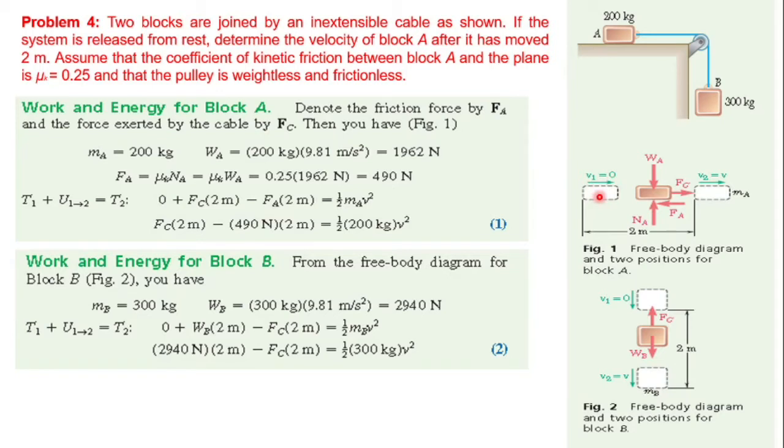The friction force is in the opposite direction, so the friction force work is negative. Positive work is due to the force Fc. So we have minus friction force times 2 meter plus Fc times 2 meter. The kinetic energy is half mV squared. This is equation 1.